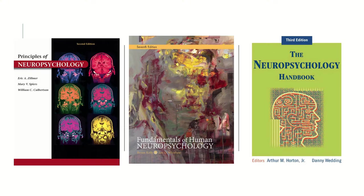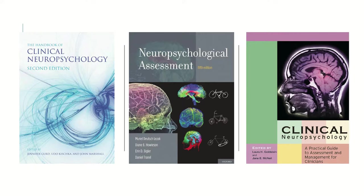The first is the Principles of Neuropsychology. The second is the Fundamentals of Human Neuropsychology. The third is the Neuropsychology Handbook. The fourth is Clinical Neuropsychology, second edition. The fifth is Neuropsychological Assessment by Lezac. And the sixth is Clinical Neuropsychology by Larry Gornstein and Jenny McMill.